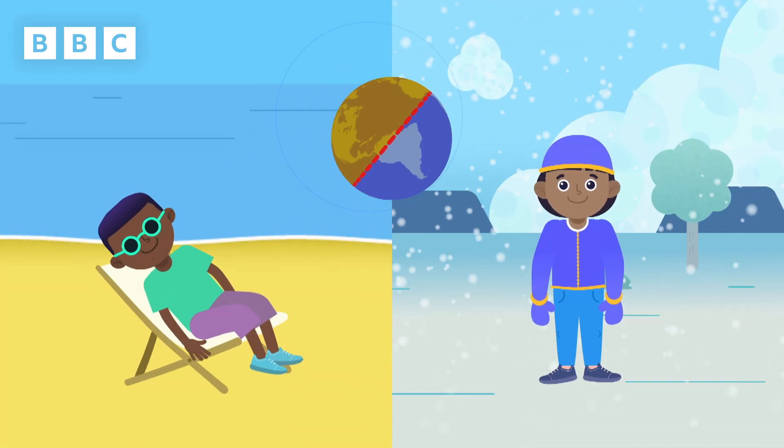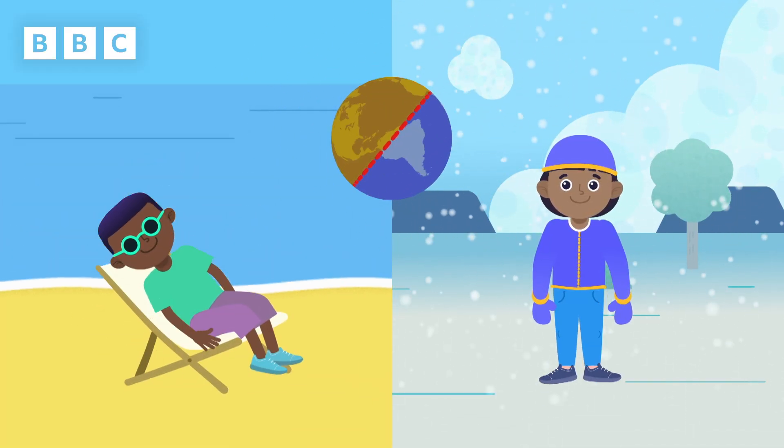So when it's summer in the Northern Hemisphere, on the other side of the planet in the Southern Hemisphere, it's winter.